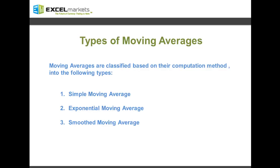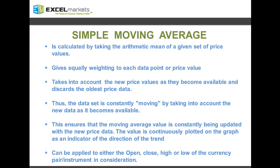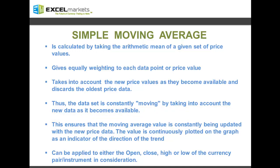Starting with the simple moving average. Simple moving average is calculated by taking the arithmetic mean of a given set of price values. It is one of the most trivial and commonly used moving averages. The simple moving average gives equal weighting to each data point or price value considered for the computation of the average. As new prices keep becoming available, the simple moving average discards the oldest price data and keeps using the latest price data in its place, constantly moving or changing its data set as new price data becomes available.